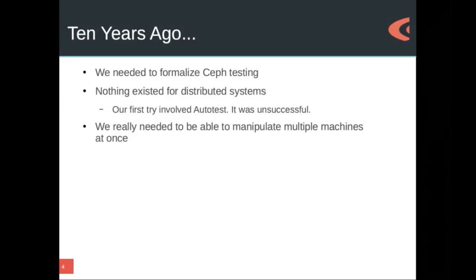At that time there weren't really any good testing systems or test frameworks for distributed systems. So we had hired a guy who had a lot more experience than me, and he decided this is a problem that needed solving. The first try involved autotests, which is used mostly for Linux kernel stuff — and we had a Linux kernel module and that's how we got into it. But it was unsuccessful because it was really designed for doing stuff on a single machine, and we need to be able to manipulate multiple machines at once when we're testing Ceph, because we have clients and servers that sometimes restart at different times.